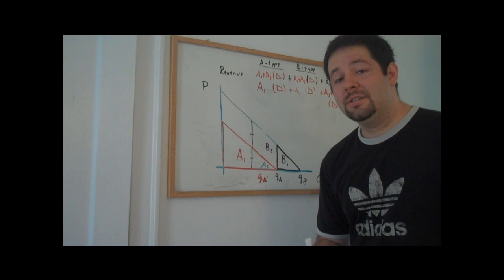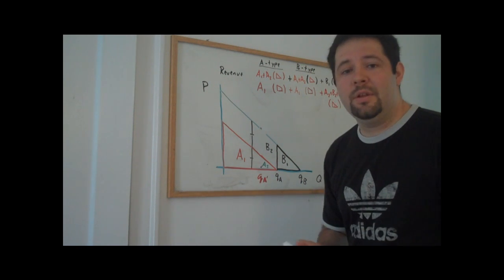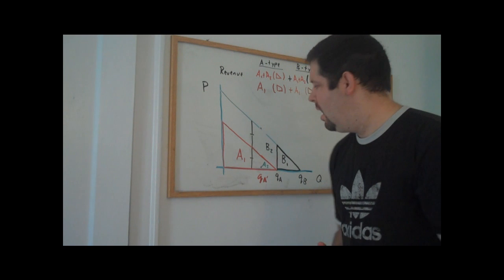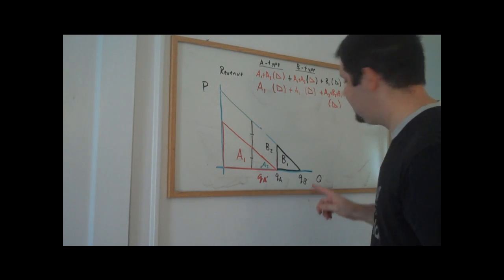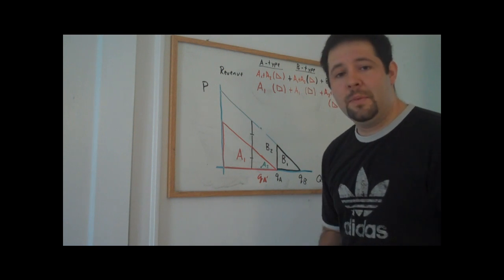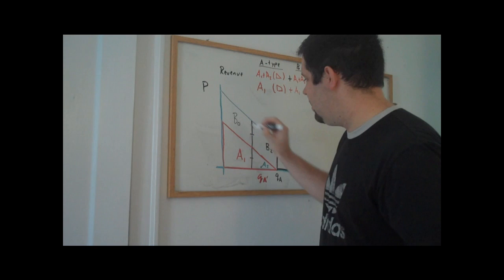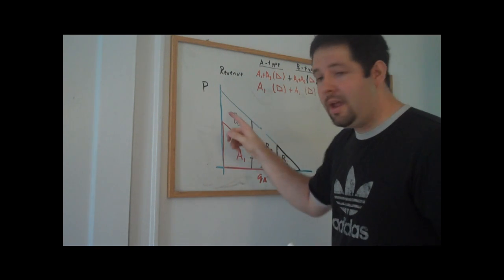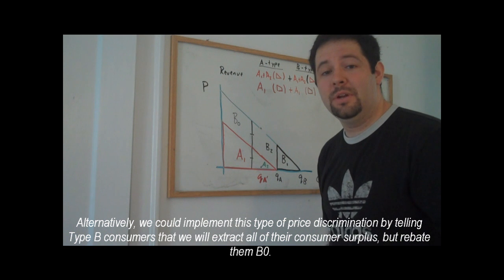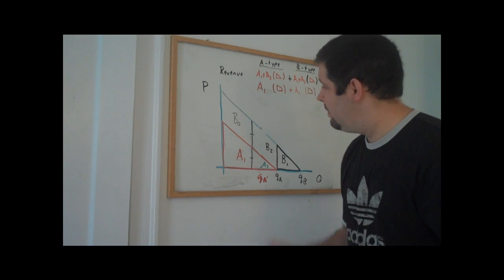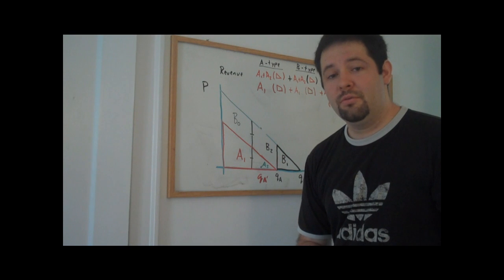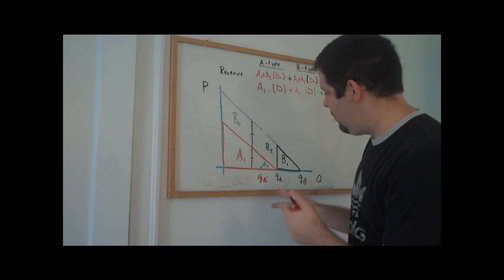To graphically depict the optimal second-degree price discrimination quantity choice for the low package, this is where the line segment representing the marginal cost of changing the quantity equals the marginal benefit line segment. The intuition is that the monopolist is optimally screening the two different types to increase profits. In the optimum, assuming no marginal cost, the monopolist makes profits of 2A1 plus A2 plus B1 plus B2. Unavoidable is the information rent B0 — the minimum amount needed to pay the high type to reveal themselves — which is surplus the monopolist simply cannot extract. This surplus results from the fact that in second-degree price discrimination, the monopolist must induce individuals to reveal their types.